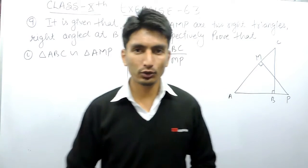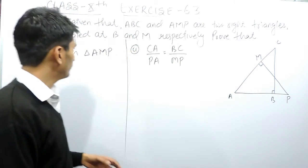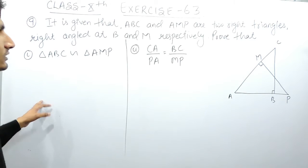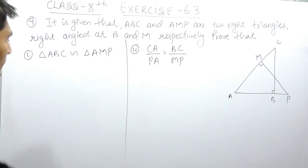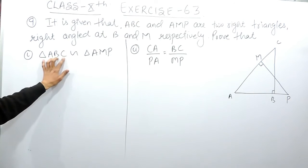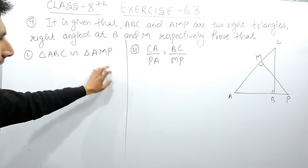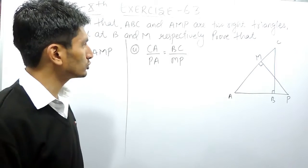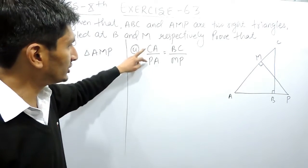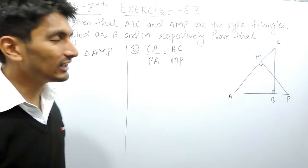Hello everyone, we are from TrueMaths and in this video we are going to solve question number 9 of exercise 6.3. The question says it is given that ABC and AMP are two right-angled triangles, right-angled at B and M respectively. You have to prove that triangle ABC is similar to triangle AMP, and then in the second part you have to prove that their corresponding sides are also in proportion, meaning the ratio between these two sides are equal.